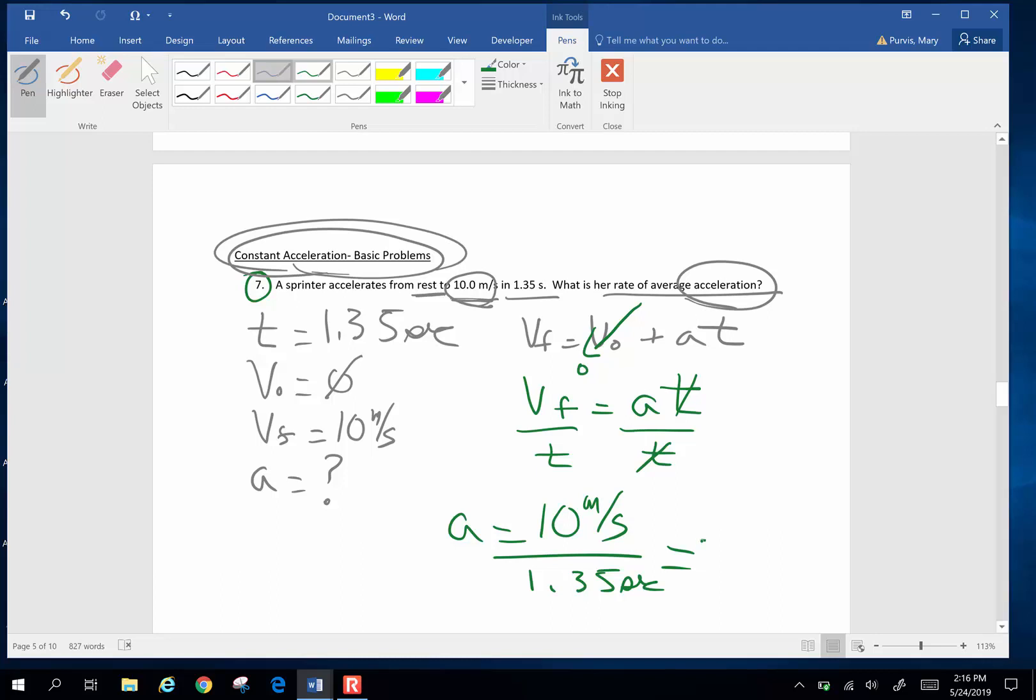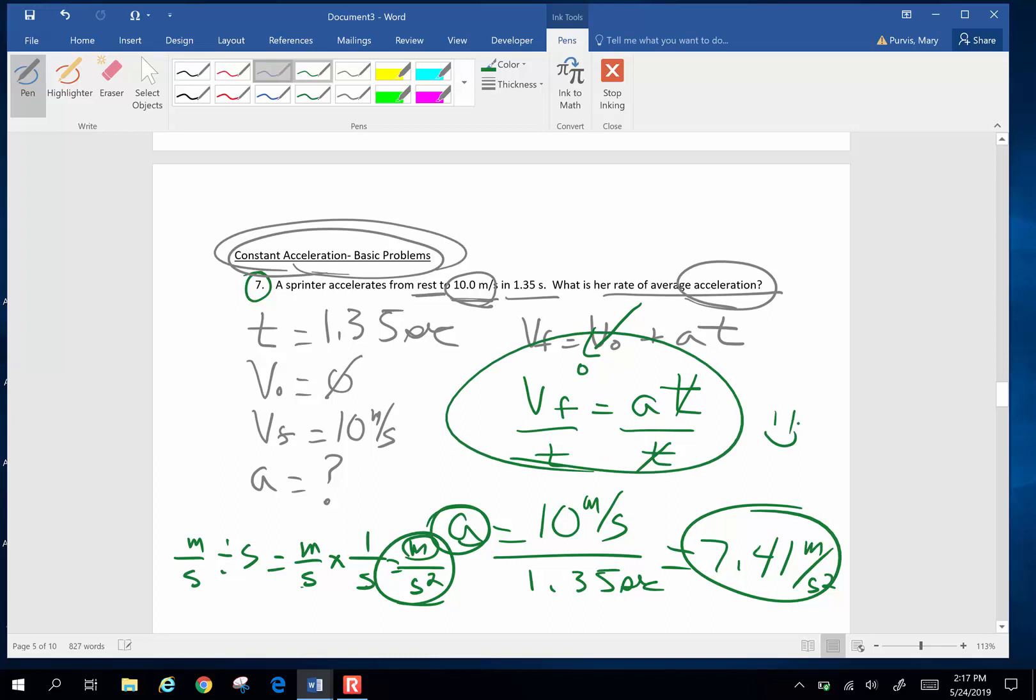10 meters per second divided by 1.35 seconds, and I get 7.41 meters per second squared. Now where do those crazy units come from? Meters per second divided by seconds is meters per second times 1 over seconds. Meters on the top. Seconds times seconds is seconds squared on the bottom. Those are acceleration units. I probably did my algebra right. Yahoo! And that will finish this video. See you later!